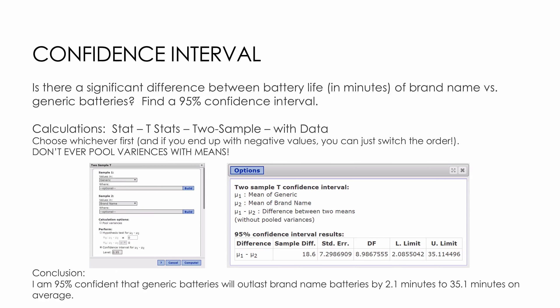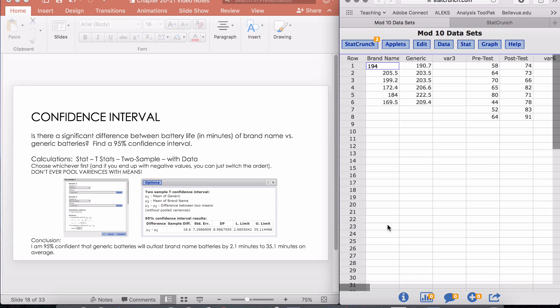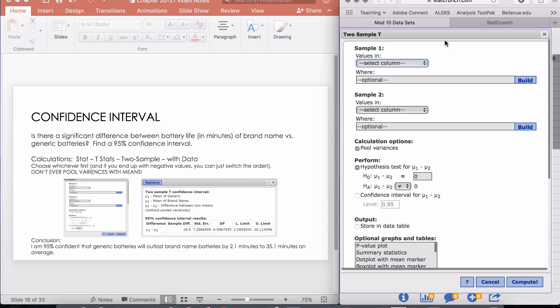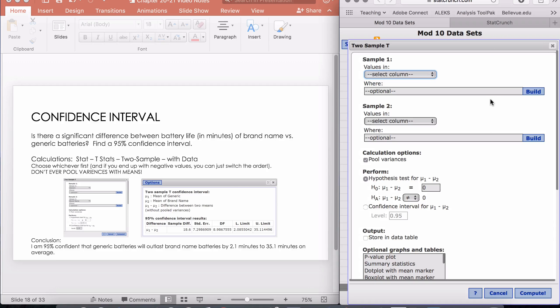For our calculations, we are going to use StatCrunch. Let's pop over here to StatCrunch, and I'm going to go to Stat and T Stats. Here I have Two Sample, and I have Data, because I was nice enough to include all of that data for you. Here you can choose brand name and generic. We already made our box plots and noticed that generic was larger. I'm going to put generic first because I like positive numbers.